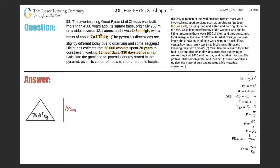Letter A. Calculate the gravitational potential energy stored in the pyramid, given its center of mass is at one-fourth its height.